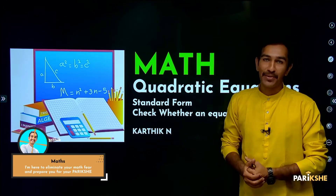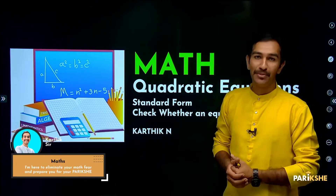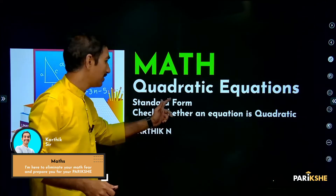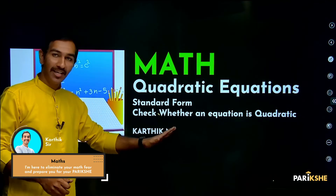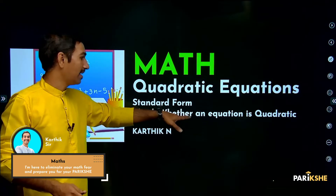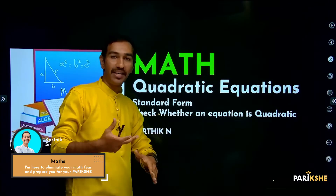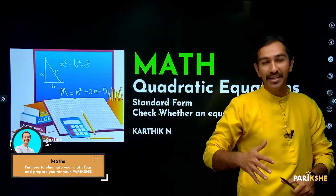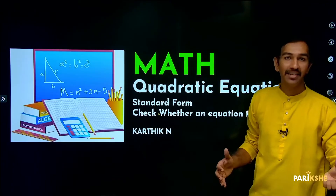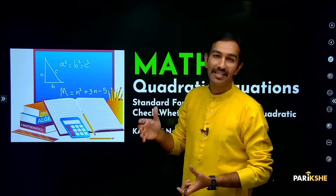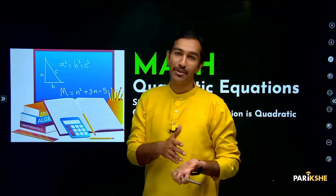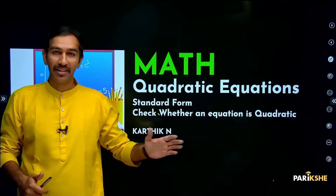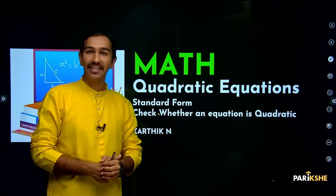The next topic is the standard form of a quadratic equation. We will check whether an equation is quadratic or not. A quadratic equation has degree equal to 2. So degree 2 means it is a quadratic equation.